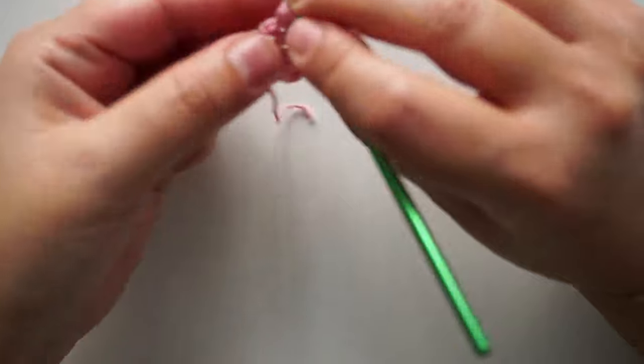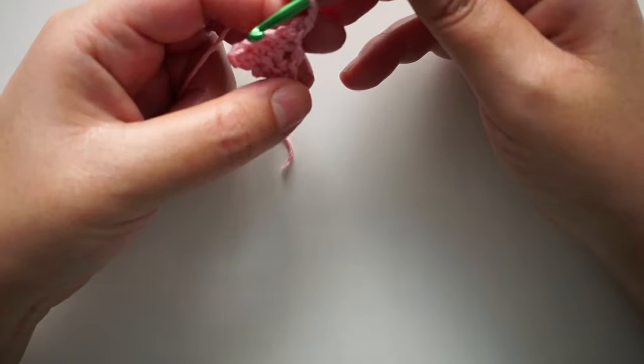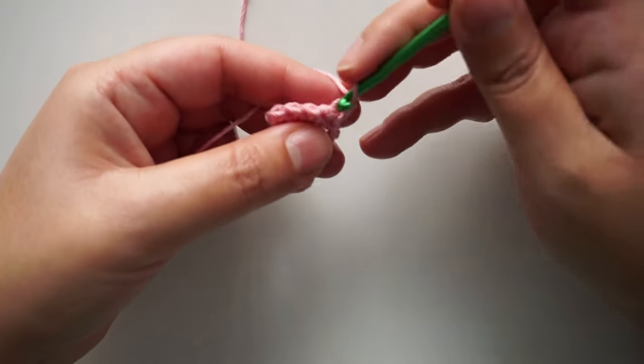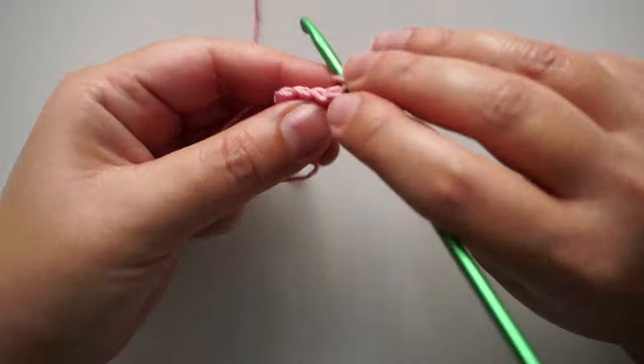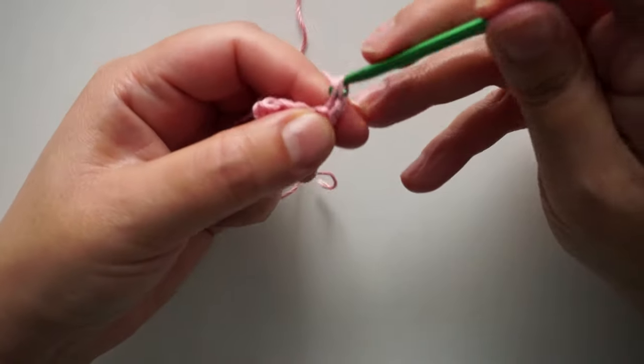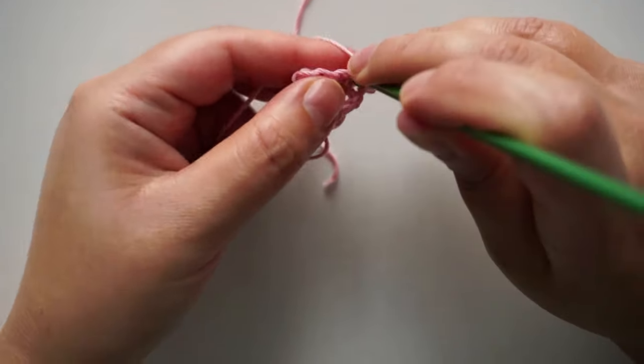So basically what you need to retain from this pattern: you chain one, one single crochet in the first stitch, and you always have to do two single crochet at the last stitch. So only at the last stitch you do the increase of two single crochet.